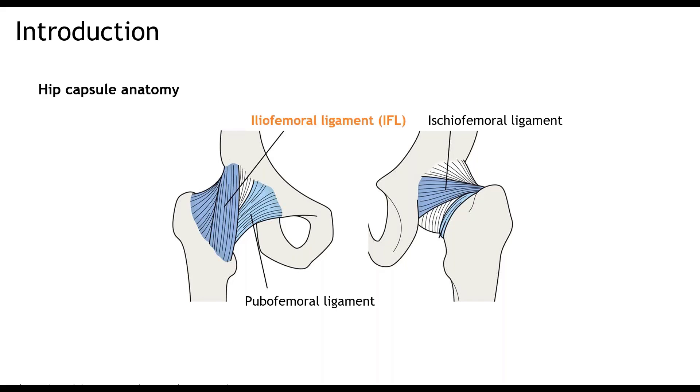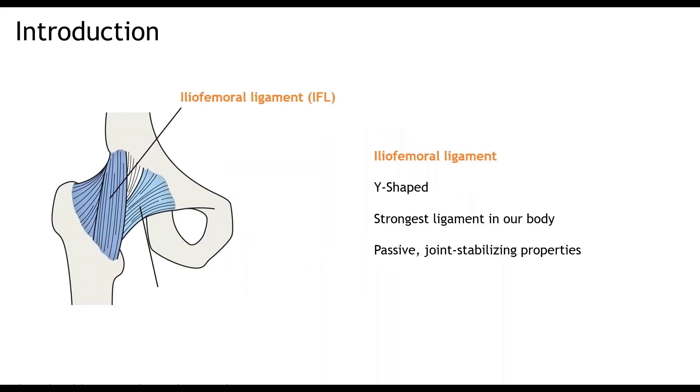As mentioned before, the iliofemoral ligament is the main focus of this study. I'll also sometimes shorten it to IFL. The IFL is a Y-shaped ligament that arises from the anterior inferior iliac spine and splits into two parts. While the superior part runs parallel to the femoral neck, the inferior portion is a bit twisted and ends at the intertrochanteric line. The IFL is the strongest ligament of the body. It can extend forces up to 350 N. This failure strength is a lot higher than the strength of the other two hip capsule ligaments. In addition, the IFL stiffness is way higher than the stiffness of the pubofemoral and ischiofemoral ligaments.